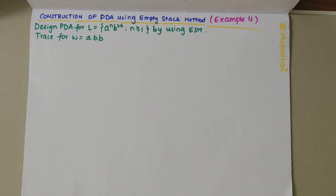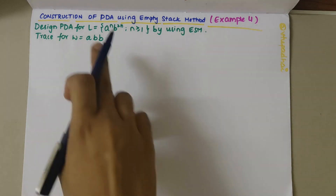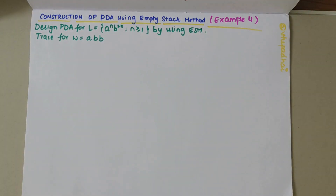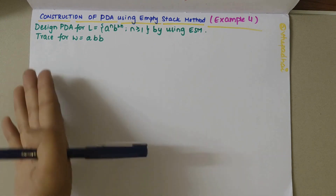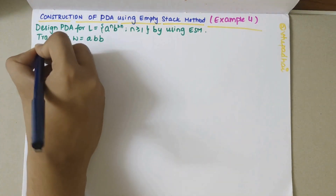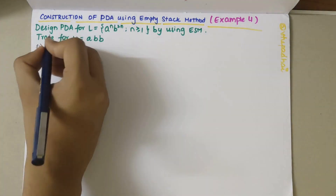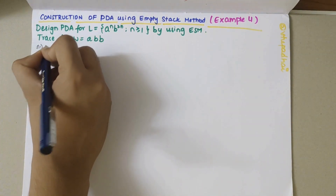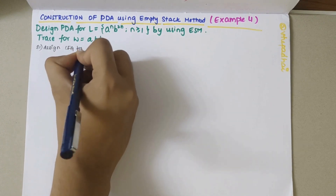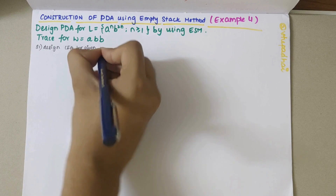In this video we'll be looking into the construction of a PDA using the empty stack method. This is the fourth example. The problem statement says to design a PDA for the given language a to the power n, b to the power 2n, where n is greater than or equal to 1, using the empty stack method. We also need to trace for the given string. My first step would be to design the CFG for the given language.